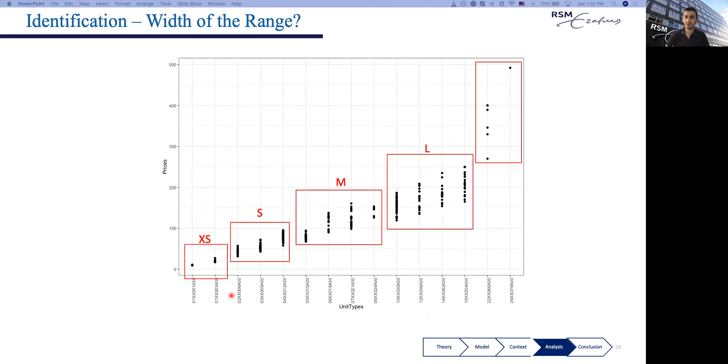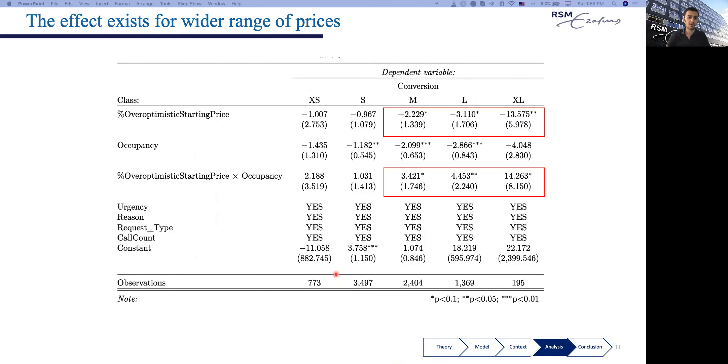Further identification: we're talking about the discrepancy of prices. We should expect to see this effect where prices really matter. When sizes are bigger, the price ranges have more width. When sizes are smaller, the price doesn't range a lot. We expect to see this overoptimism for bigger sizes. If we run the same model for different sizes, we see that the negative effect of overoptimistic starting price is only significant when sizes are bigger than medium, and then the price actually ranges a lot.